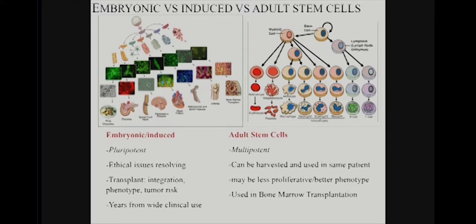Adult stem cells have fewer differentiation options available to them — they're multipotent — but some advantages: they can be harvested and used quite easily in the same patient. They may have a more appropriate, better consolidated differentiated phenotype and lower tumor risk. These are used all the time, for example, in bone marrow transplantation.